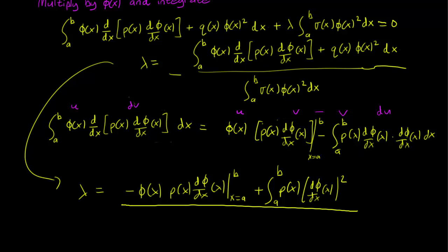The last term is q(x) phi(x) squared, which we subtract. That's our numerator. The denominator is the integral from a to b of sigma(x) phi(x) squared dx, as it was before. This is exactly the Rayleigh quotient that we sought to derive.